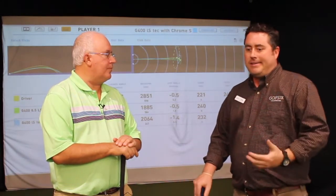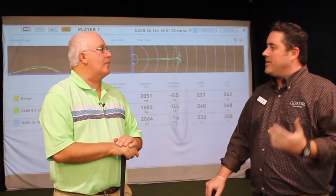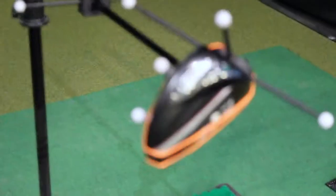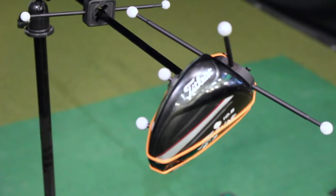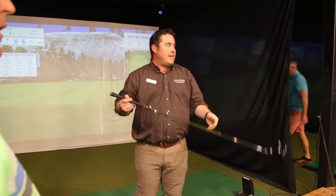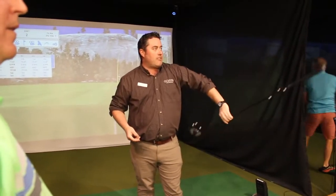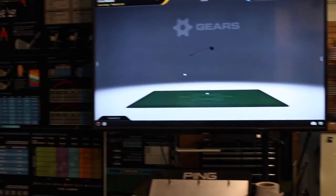Yeah, so Gears is really on the cutting edge as far as technology that I can use as a club fitter to help golfers get better. Gears, the technology that runs Gears came out of Hollywood, so a lot of the special effects you see in movies, video games, it's the same technology that they use to develop all that stuff. It's these cameras that are all around us here. We use these clubs here with sensors, and it gives us a really accurate depiction of what you're doing with the golf club during your golf swing.